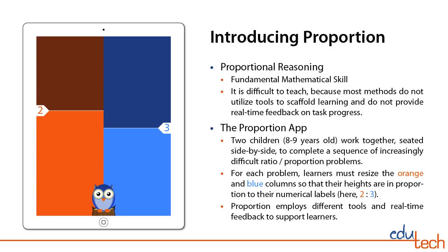Proportion is a tool to learn proportional reasoning. Two children work together, seated side by side, to complete a sequence of increasingly difficult problems. For each problem, learners must resize the orange and blue columns so that their heights are in proportion to their numerical labels.